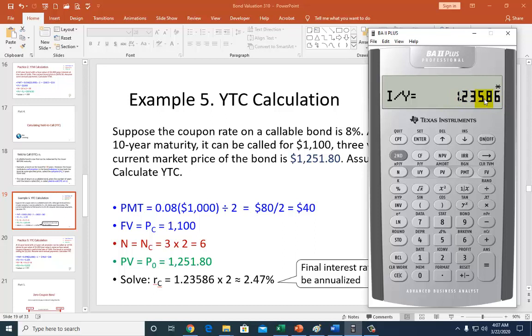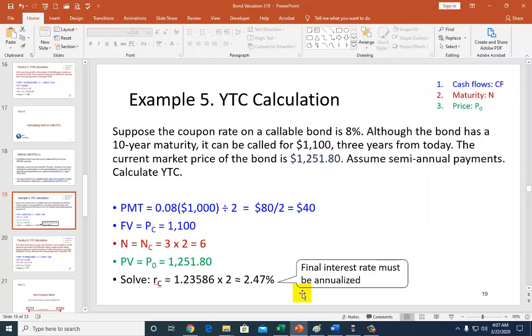Be careful now. This is not your final answer. If you list this as your answer, you'd be incorrect. So you've got to go times 2 equal, just as I show right here, right? And your final answer is 2.47.